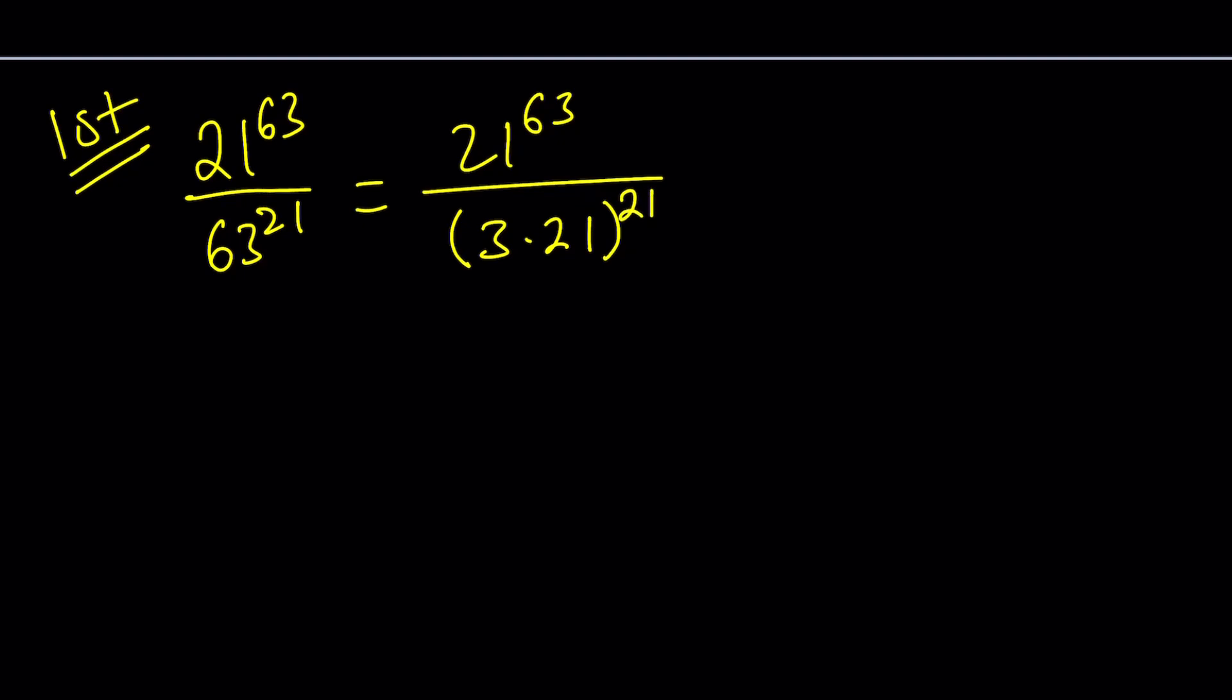Now, I can go ahead and distribute the 21. In other words, if you're raising a product to a power, then that's going to be the product of powers. So it's like this: (ab)^n = a^n times b^n. Make sense? That's what we're going to use. So 21 to the power 63 divided by 3 to the power 21 multiplied by 21 to the power 21.